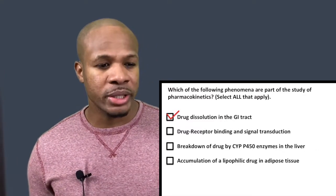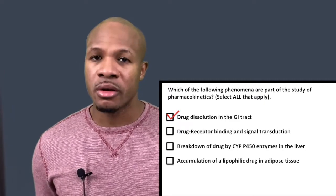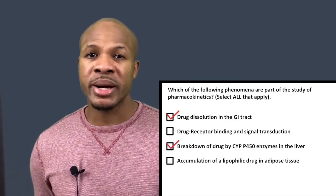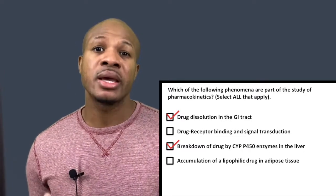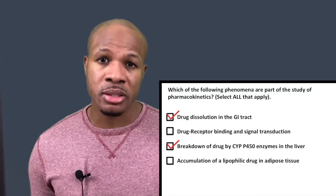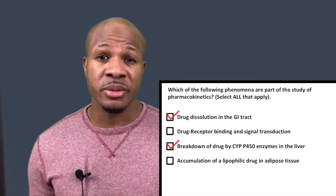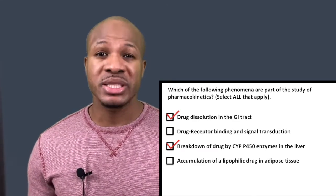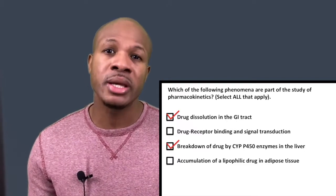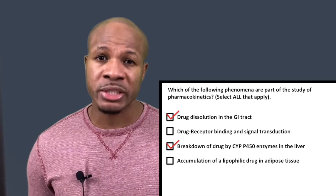C says: breakdown of drug by CYP P450 enzymes in the liver. Clearly that's metabolism. When a drug comes into the body, the drug has to be metabolized and excreted. The main enzymes responsible for metabolizing drugs are the CYP P450 enzymes — the cytochrome P450 enzymes. So this would definitely be part of metabolism, and metabolism is a pharmacokinetic process because that's what the body is doing to the drug. So C would be a correct answer as well.